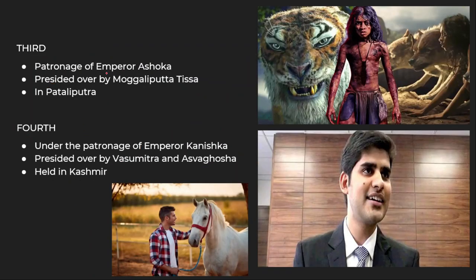The third Buddhist council was held under the patronage of Emperor Ashoka, who belonged to the Mauryan dynasty, as covered in the Chronology of Ancient India playlist. So the third Buddhist council was held under Ashoka and presided over by Mowgli Putra Tissa. Mowgli is the king of the jungle — so Ashoka is like Mowgli — that way you will always remember that the patronage was under Ashoka and it was presided by Mowgli Putra Tissa.